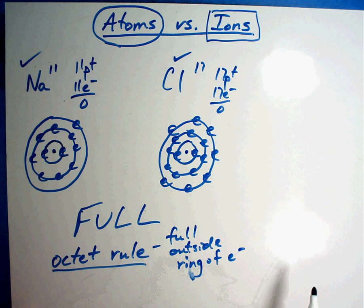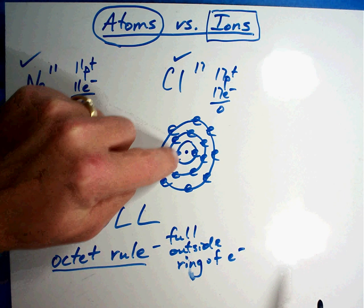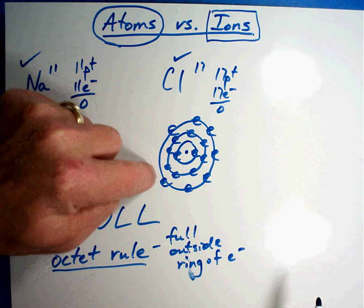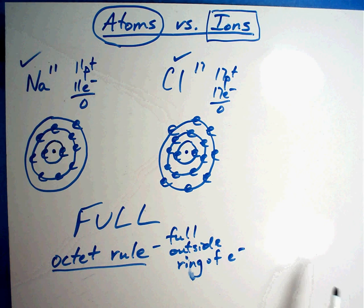Now let's check. First ring's full, 2. Second ring's full, 8. Third ring only has 1. That's not full. Chlorine: first ring has 2, that's full. Second ring has 8, that's full. Third ring has 7. Oh, he's so close, but he's not full either.